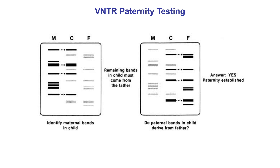VNTRs are so-called junk DNA — DNA that doesn't code for anything. We're not really sure if it has a function, but it's useful because several different VNTR sequences have been identified. They're found at set locations on chromosomes, and from person to person, although the sequence of each repeated element is the same, we differ in the number of those repeats. If we want to do a proper test, we don't just look at one VNTR — we look at four or more, as shown here. We've got a paternity test with mother M, child C, and father F.